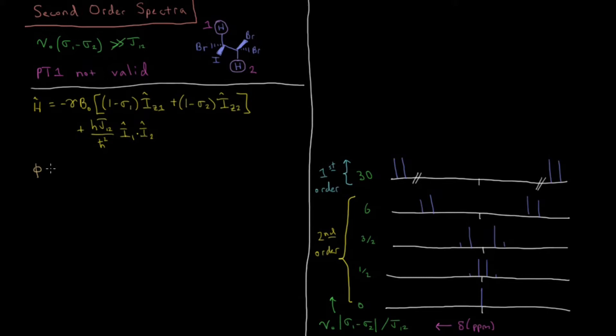So we're going to define our four states here. We're going to have phi-1, this being spin up for proton-1, spin up for proton-2. We have phi-2, which is equal to spin up proton-1, spin down proton-2. Phi-3, spin down proton-1, spin up proton-2. Protons 1 and 2 here on our given molecule. And phi-4, which is spin down for both of them.